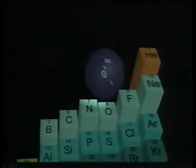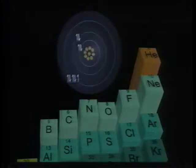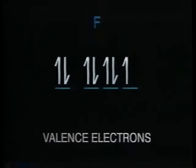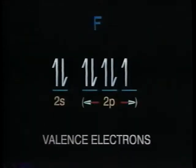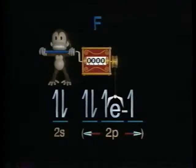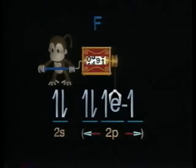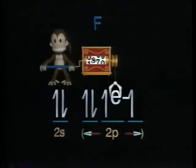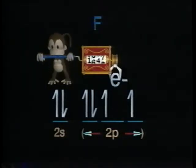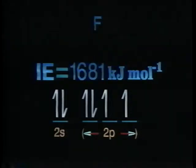Continuing to the right is fluorine with nine protons and nine electrons. Taking away the 1s electrons leaves seven valence electrons: two in the 2s orbital and five in the 2p orbitals. The most easily removed electron is again paired up in a 2p orbital, so fluorine should be easily ionized. However, fluorine has an extra proton in its nucleus compared to oxygen. This increased positive charge makes the ionization energy of fluorine higher than that of oxygen. The ionization energy of fluorine is 1,681 kilojoules per mole.